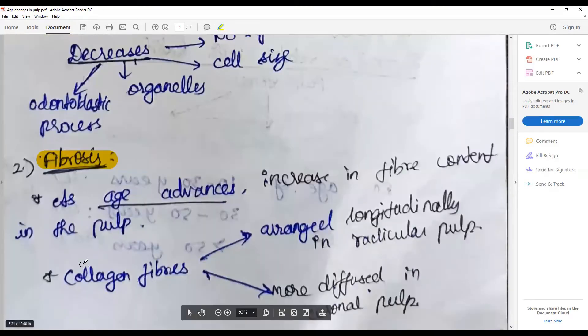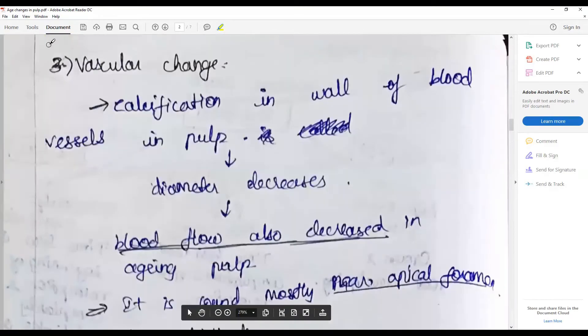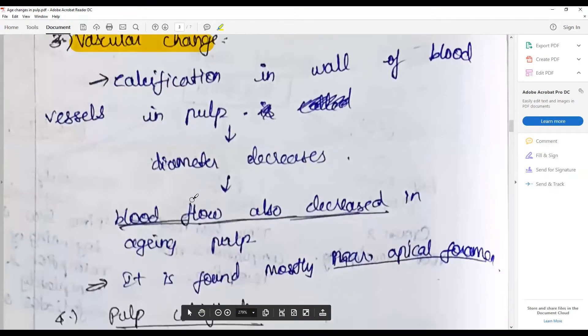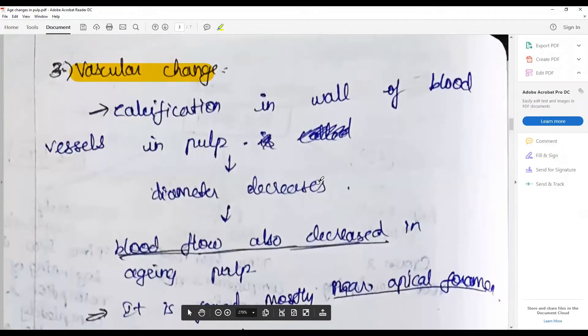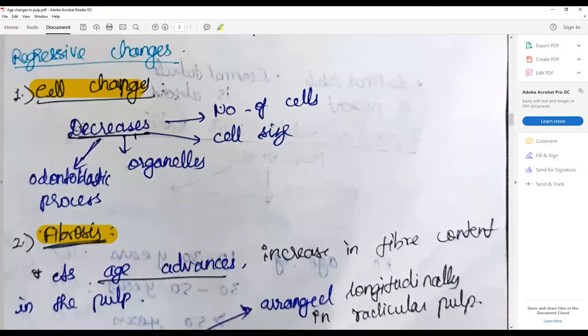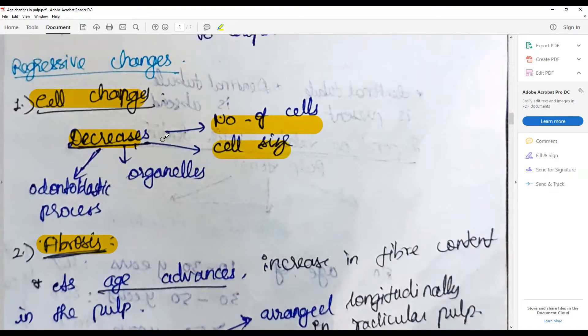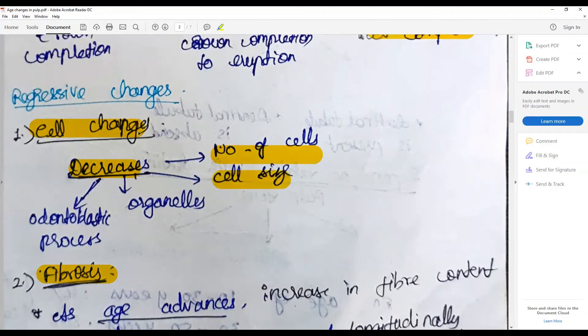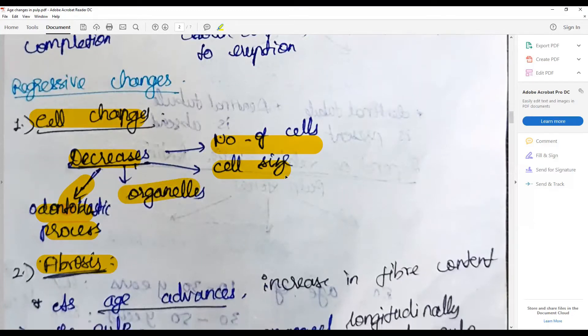alteration in collagen fibers, vascular changes, then pulp calcification. Going in depth into each of them: the cell changes. The cellularity decreases in terms of number of cells as well as cell size with age. As the age increases, the cellular component decreases. It may be reflective of the decrease in the odontoblastic process because dentin formation persists throughout the life.